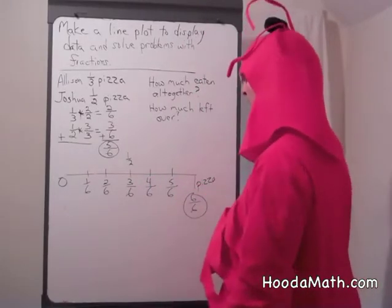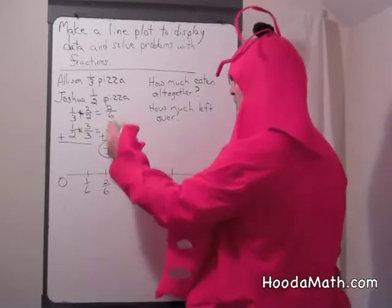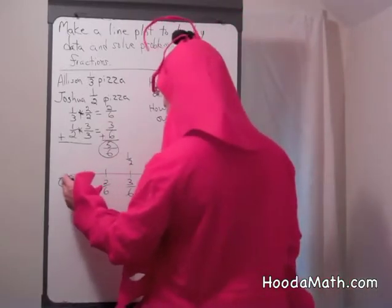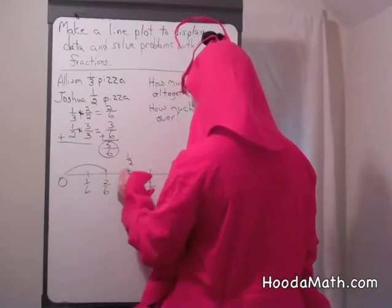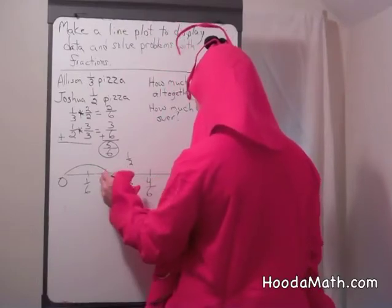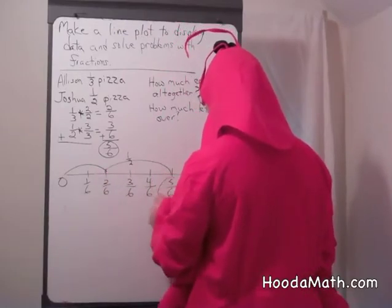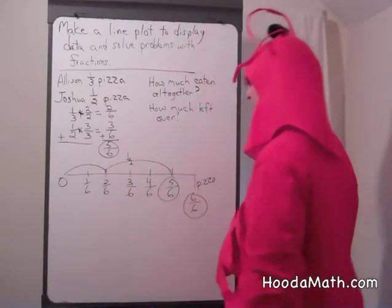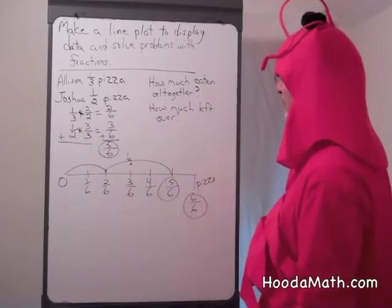So let's add. 2 sixths, which would go here, plus 3 sixths — 1, 2, 3 — would give us 5 sixths. So that answers our question: how much altogether? 5 sixths.